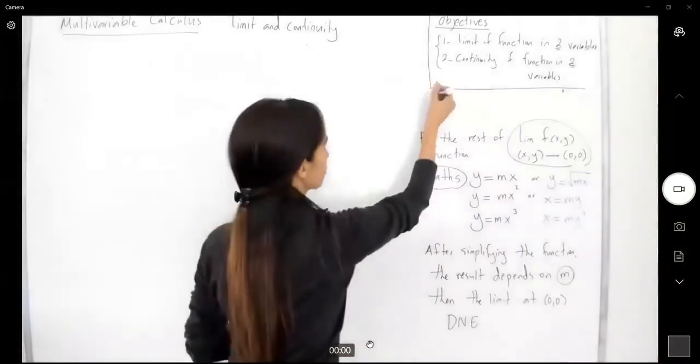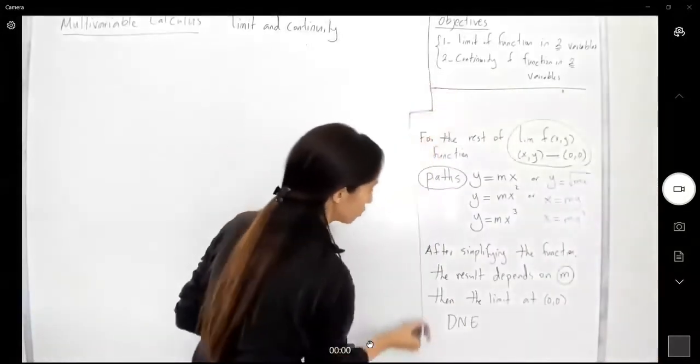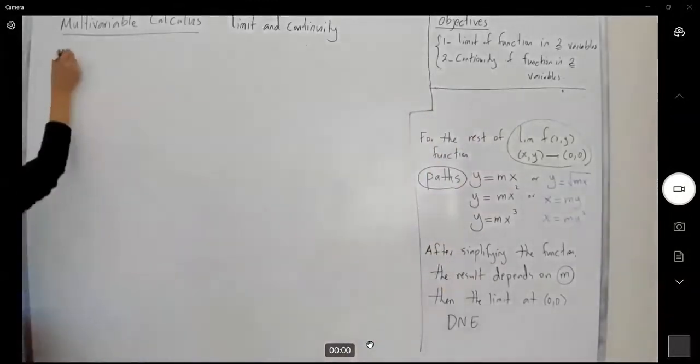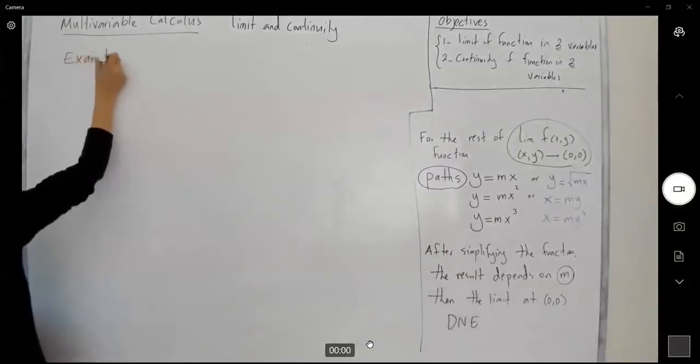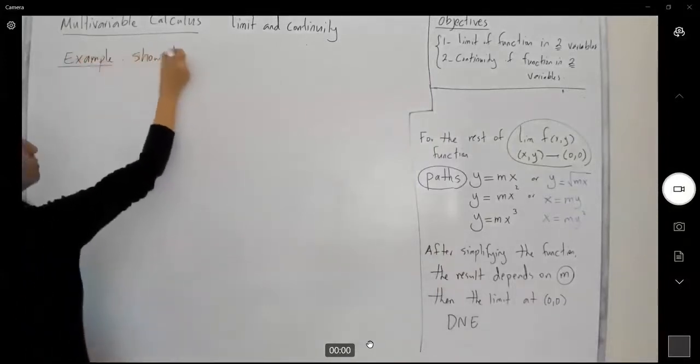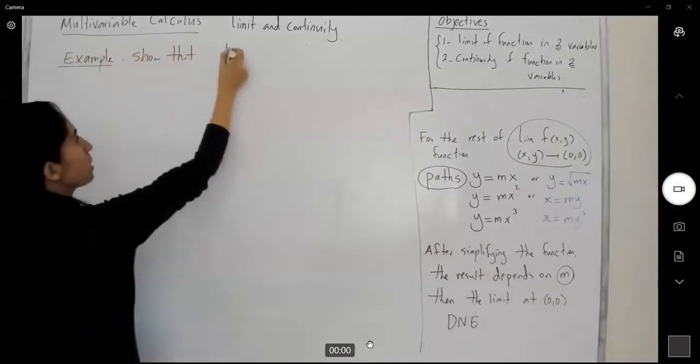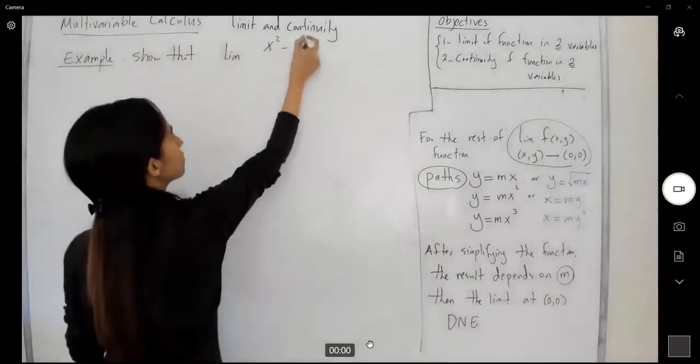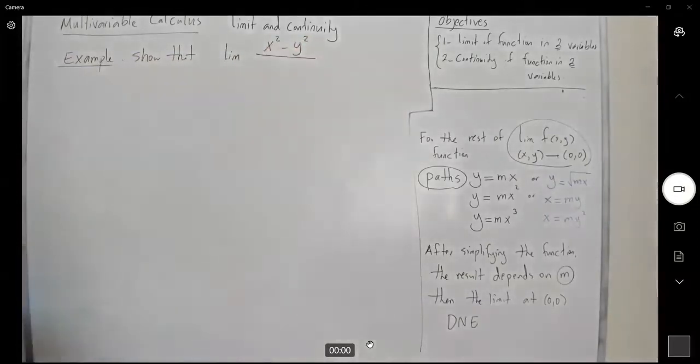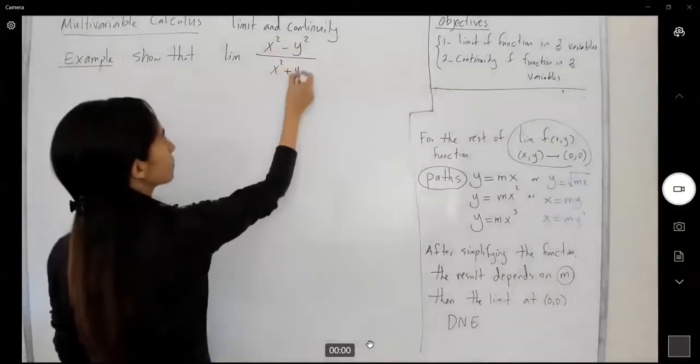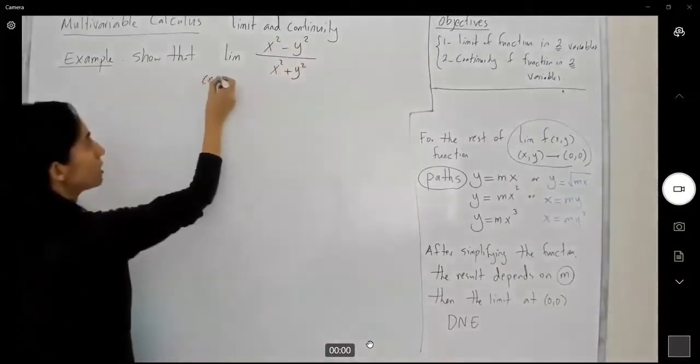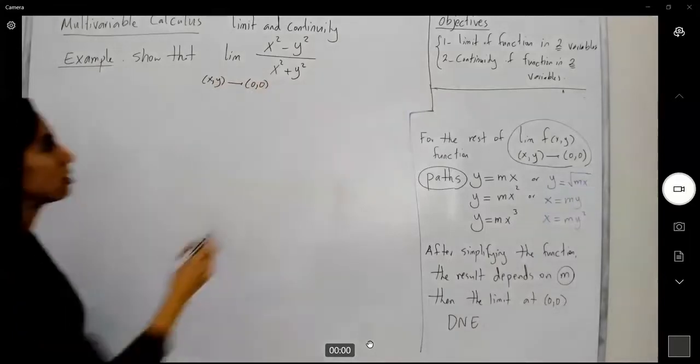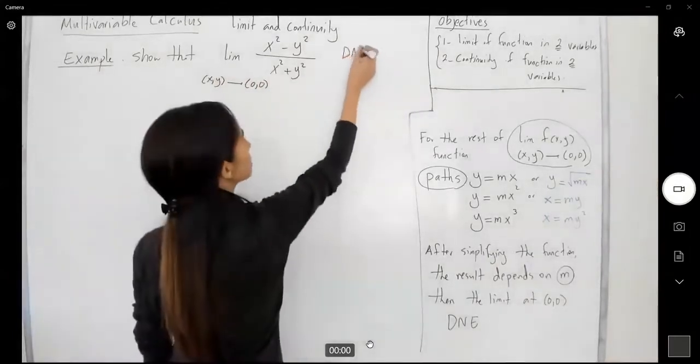As a reference, we're going to go back and forth using general paths. This example says, show that the limit of x squared minus y squared divided by x squared plus y squared, while x and y are getting closer and closer to the point (0,0), does not exist.